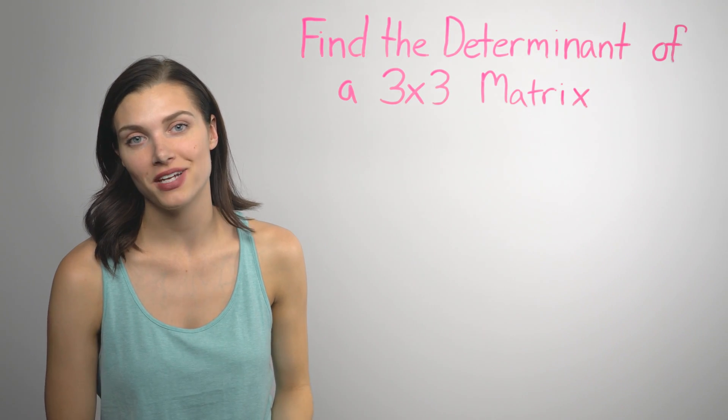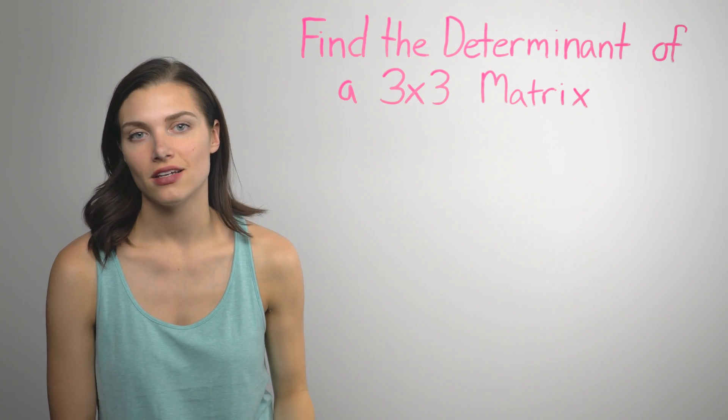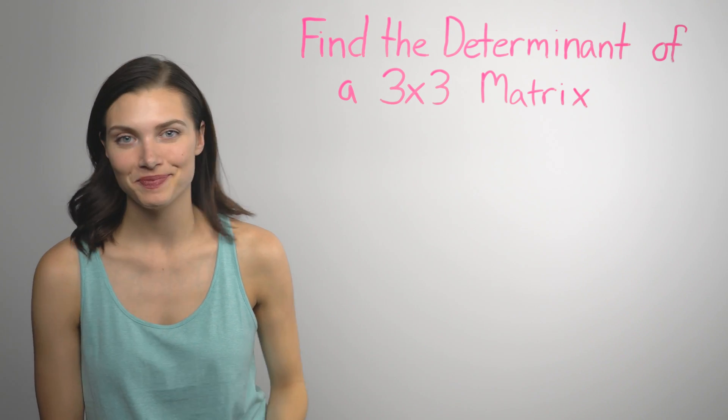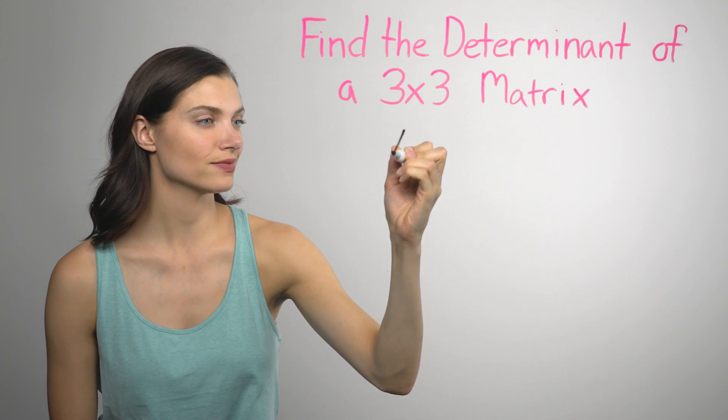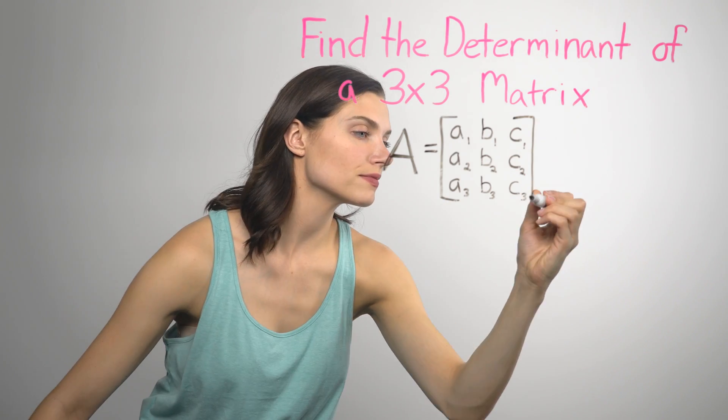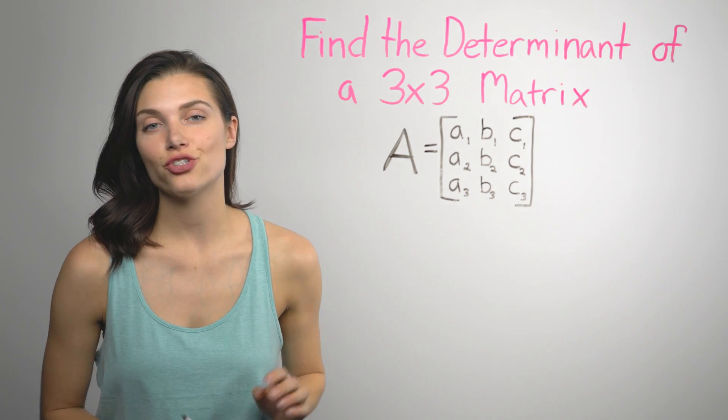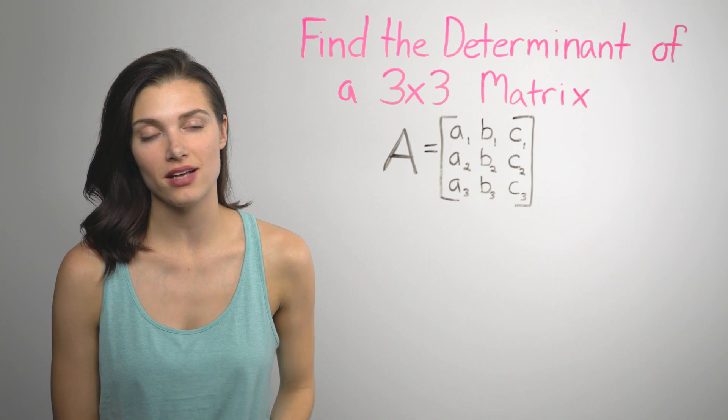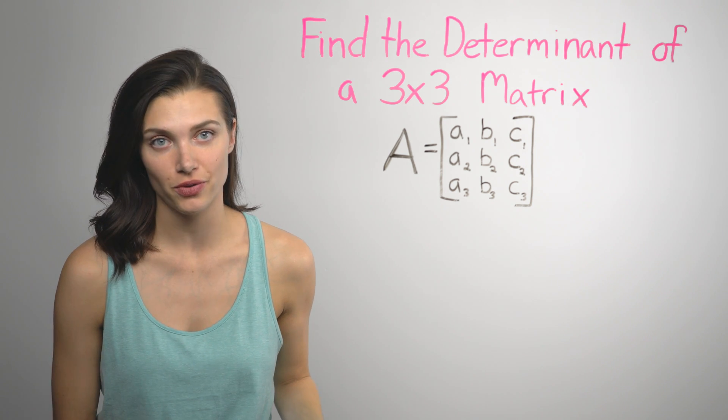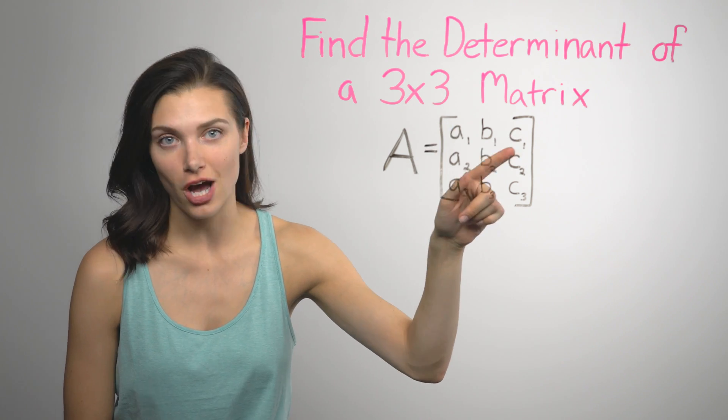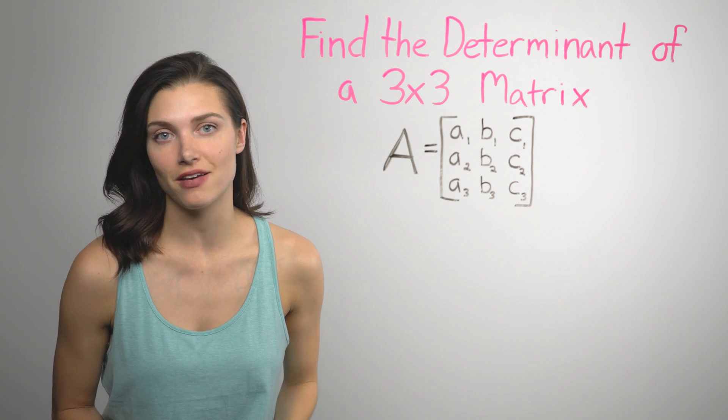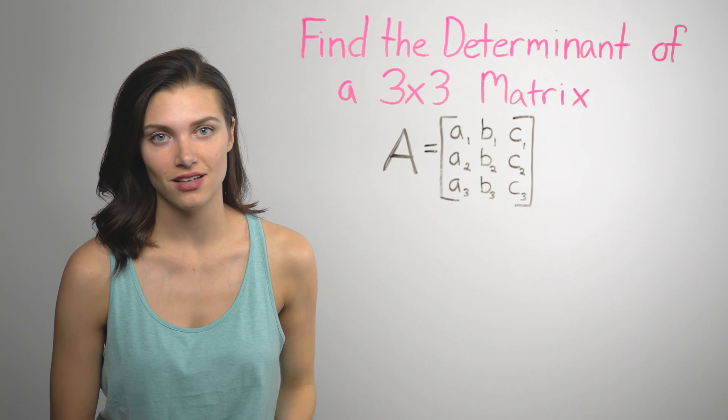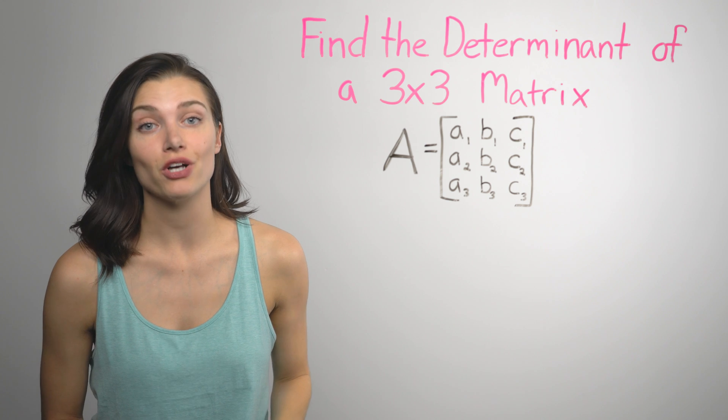Finding the determinant of a 3x3 matrix is a bit more complicated, so I'll go step by step. The trick to doing this is to break the process into parts that are more manageable. If we look at each element in the top row, we can find the determinant of the other rows with respect to that element. It's a little confusing, so I'll show you.